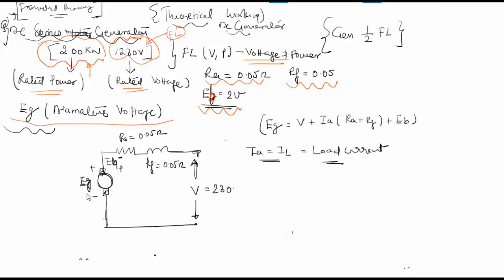When calculating the load current, IL equals 200 times 10 raised to 3 divided by 230, which equals 869.56 amperes.